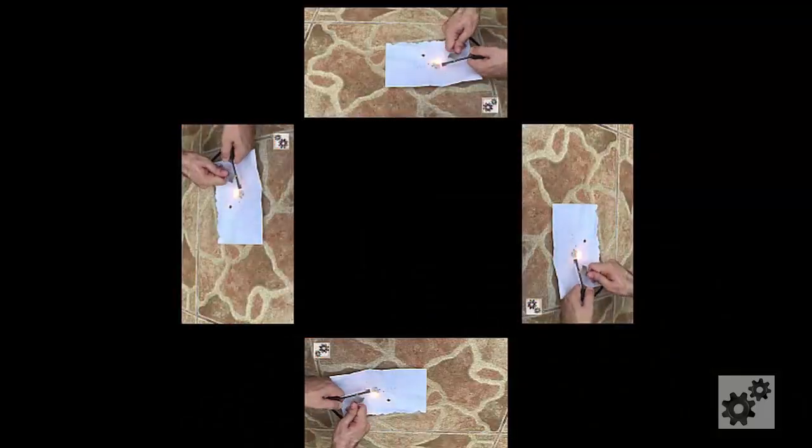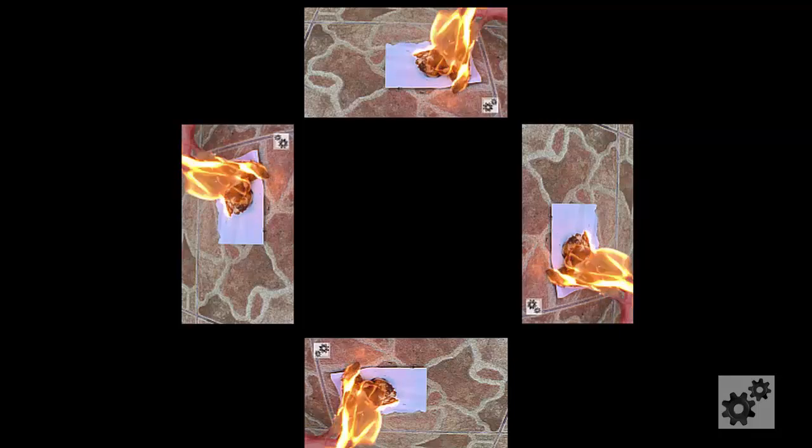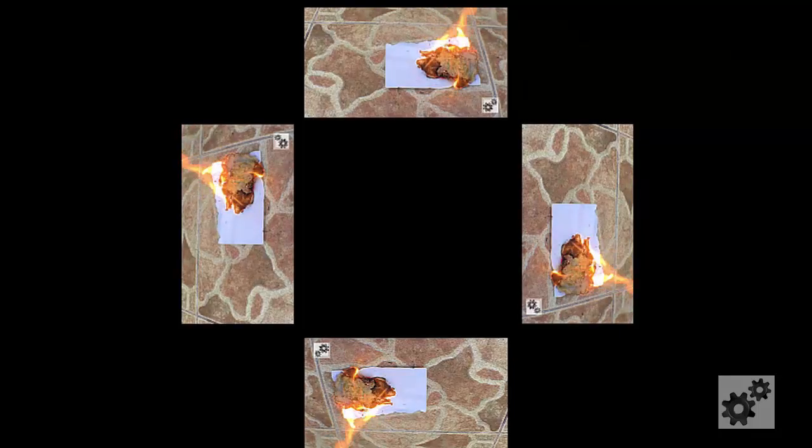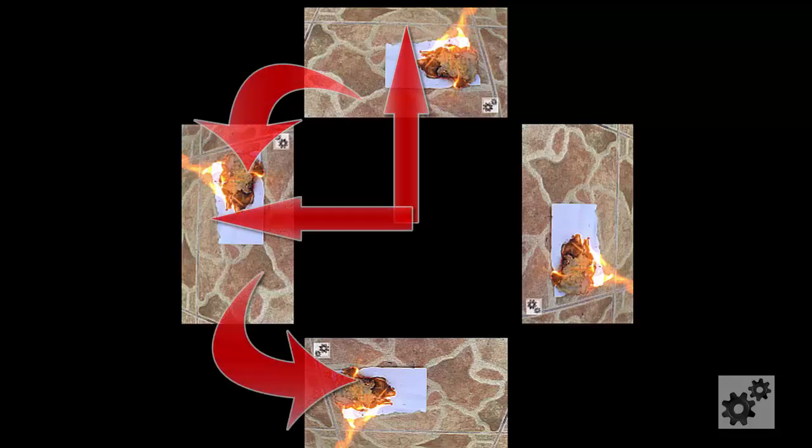After I was done playing with that, I thought, why should I be limited to the videos out there? So I decided to make my own. I noticed that most of these videos on YouTube are basically four same videos on one screen. The top one is upright and as you move anti-clockwise across the screen, each video has been rotated 90 degrees to its left.